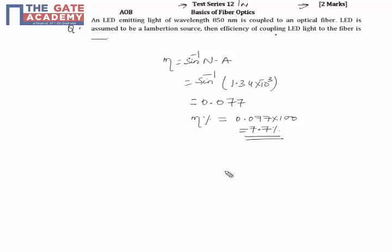What is the efficiency of coupling LED light into the fiber? The given numerical aperture is 1.34 × 10^-3, which is not printed in the question.